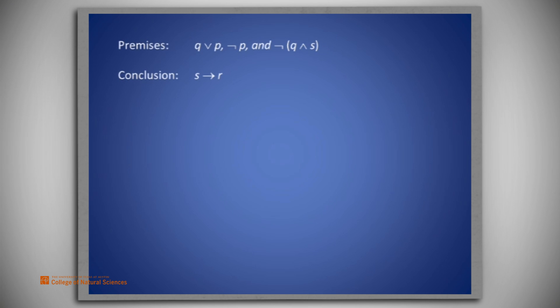The conclusion is S implies R. Conditionalization allows us to assume S as if it were an extra premise. If we were then able to conclude R from S together with the original premises, then the conditionalization rule says we can conclude S implies R without the premise S.